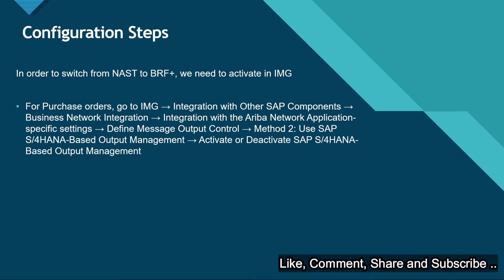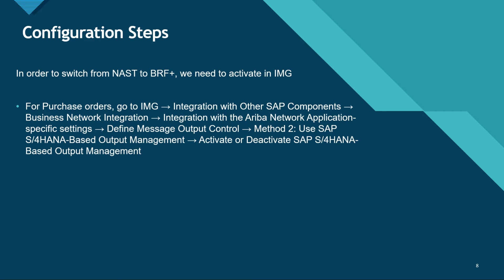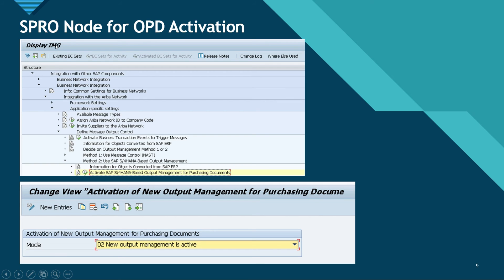To switch from NAST to BRF+ we need to activate a function in SPRO IMG. For purchase orders, go to IMG, click on Integration with Other Components, then Business Network Integration, then Integration with Ariba Network, then Application Specific Settings, then Define Message Output Control, then go to Method 2 — Use SAP S/4 HANA Based Output Management. There you have an option to activate or deactivate S/4 HANA based output management. In the SPRO screen, navigate to that node: Integration with Other Components > Business Network Integration > Integration with Ariba Network > Application Specific Settings > Define Message Output Control > Method 2, and click on Activate SAP S/4 HANA Based Output Management for Purchasing Documents.